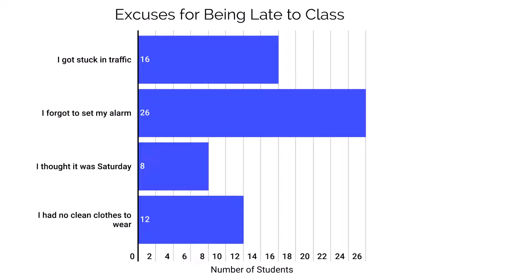A common question that comes up is the difference between a bar chart and a histogram. We learned in the 2.1 video that histograms are showing the frequency of a numerical value — we are counting occurrences within a range or bin. Bar charts are really meant for categorical data. For example, we are counting the number of occurrences for a particular category.